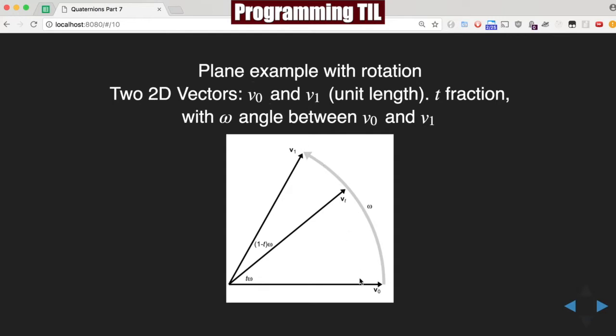So here's an example in 2D. We have two vectors, v1 and v0, and we're going to interpolate between the two along this sphere, and we can do that with some fraction t.